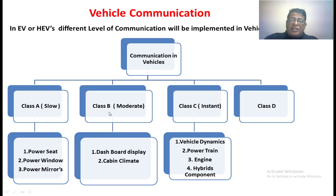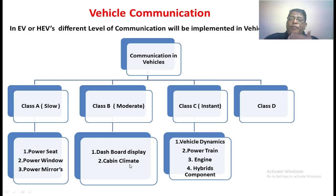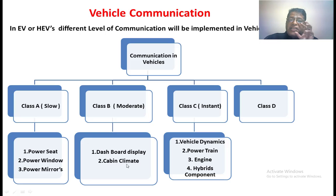Class B communication occurs at a moderate speed. Examples include the dashboard display and cabin climate control. If you want to increase the cooling in the vehicle, you don't need it instantaneously, but you also don't want it very slowly — a moderate speed is required. Such types of components are kept under Class B communication.